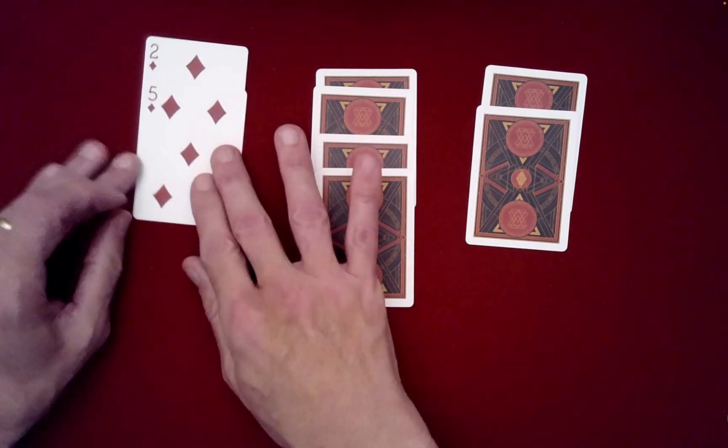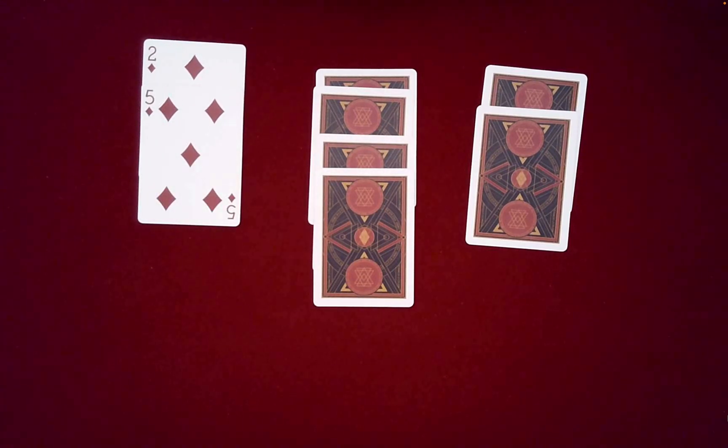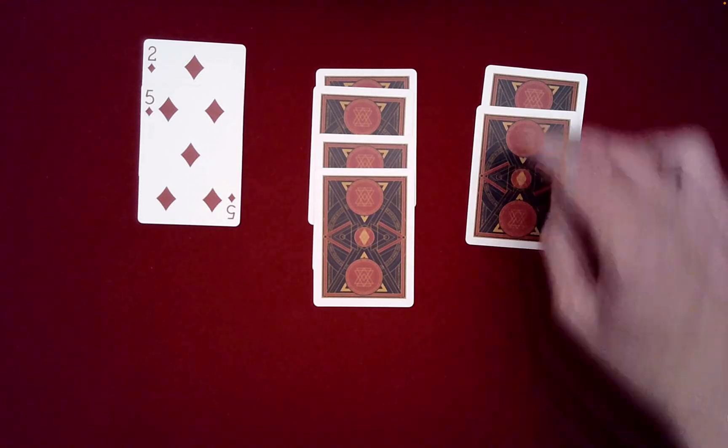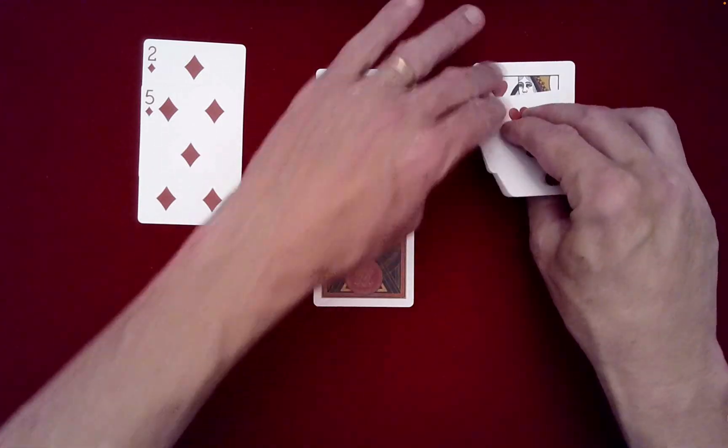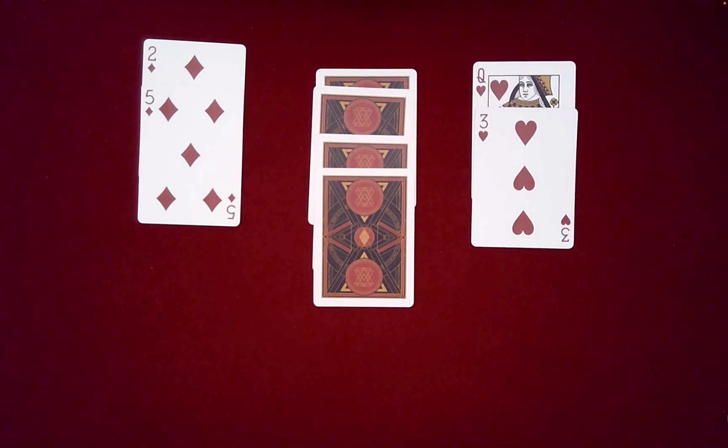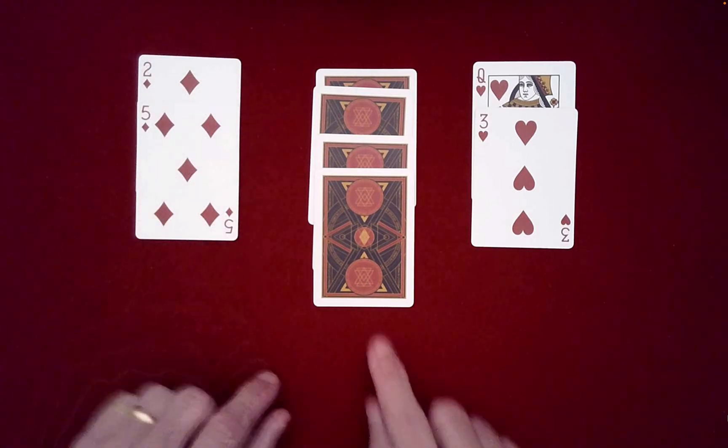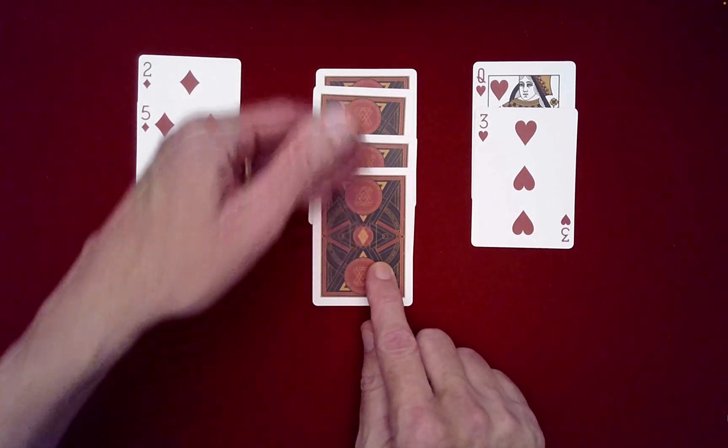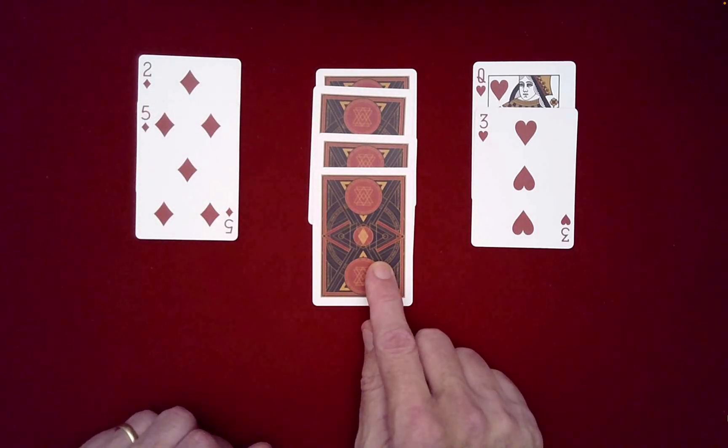Odd on the ends. Well, two plus five is seven, that's odd. Odds on the end. Is that true? Queen's 12, three, and then plus three is 15. That's odd.